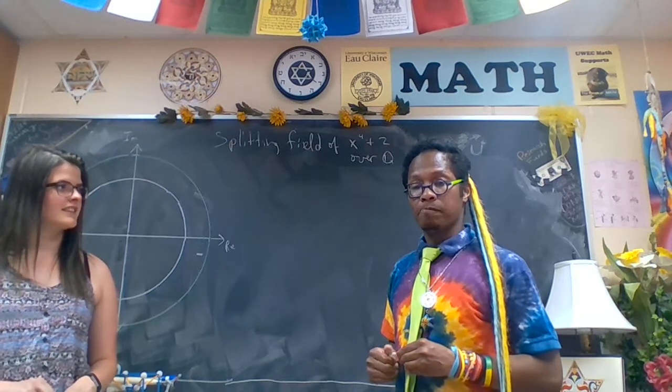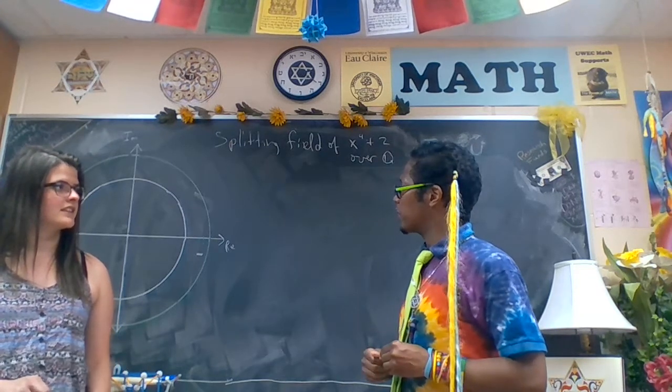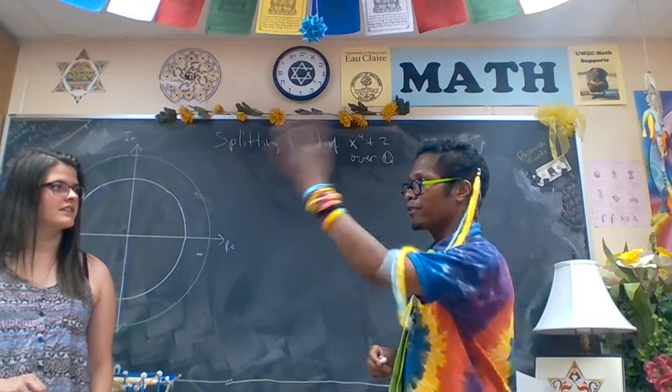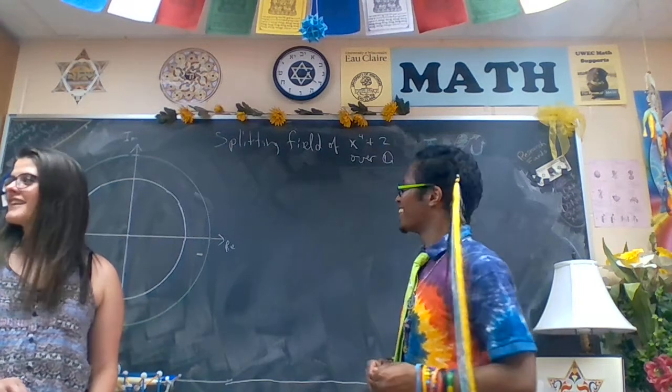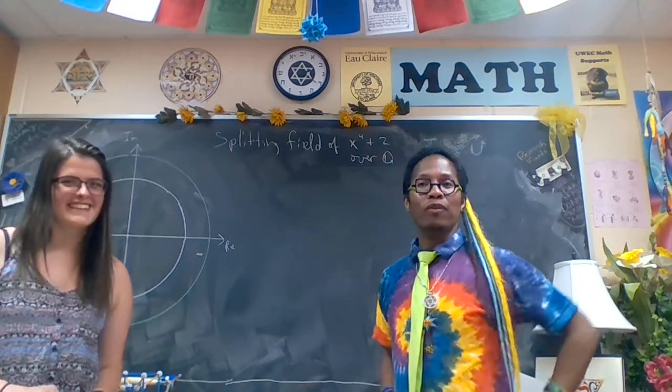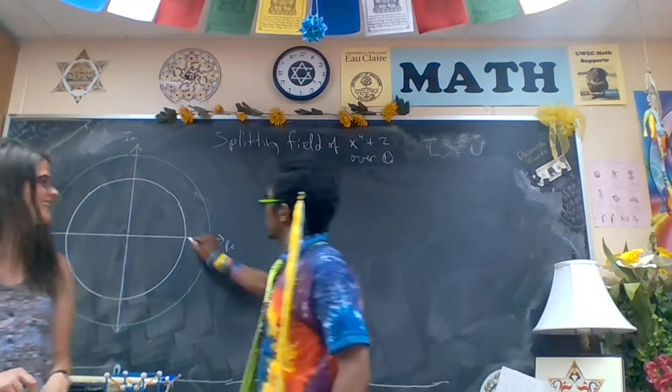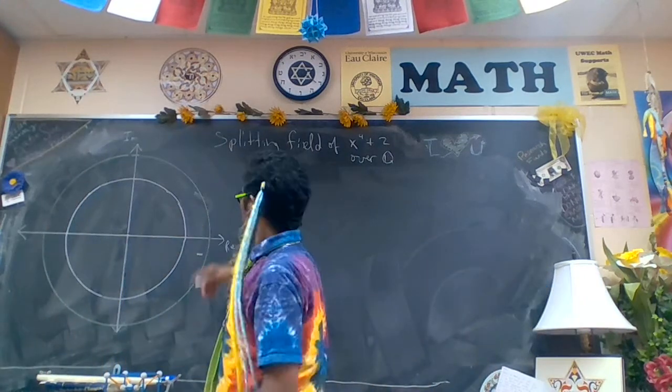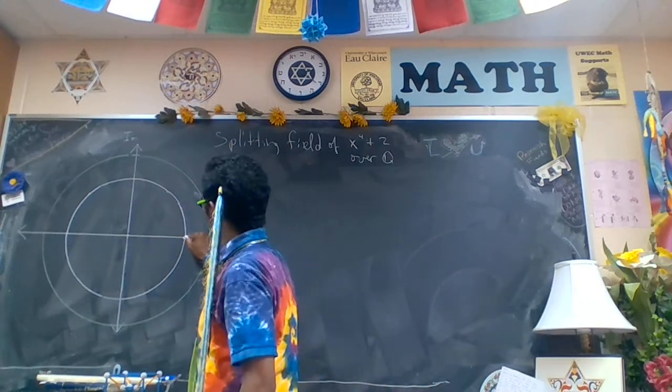So to find the four roots, it's helpful first to consider the eighth roots of unity. So here we have the complex plane, real axis, imaginary axis. This is the unit circle.